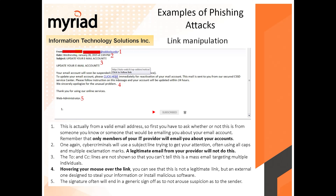Here's another example of link manipulation. Number one, the email address — ask yourself whether this is from someone you know or somewhere you're expecting an email from. Notice they are telling you to update your email account. It's only your IT provider who should do this, and they typically have access and don't even need to ask you. So why would someone email asking you to do this? Unless it's fake.